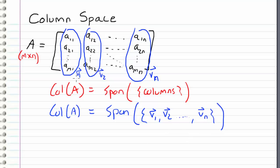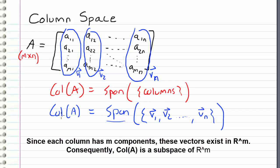So we just took the columns of our matrix, and then we took the span of those columns. And what we're left with is the column space of our matrix.